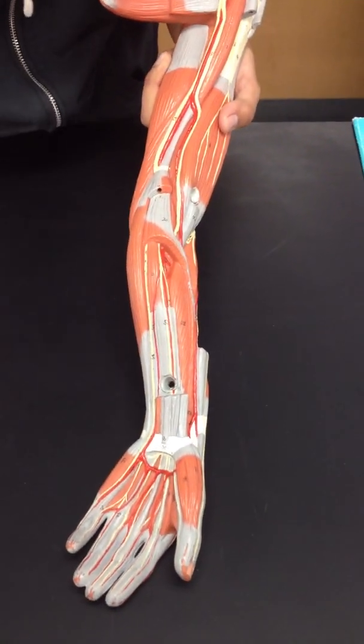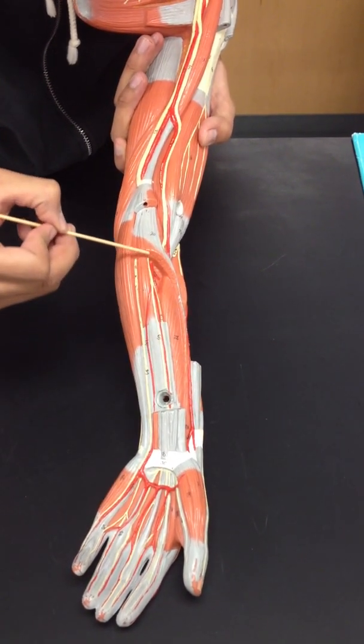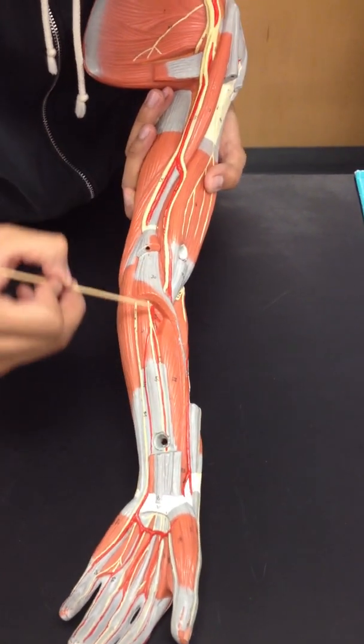The median nerve, you stick it down the middle of your hand. That's number 58, that yellow line right there. The median nerve.